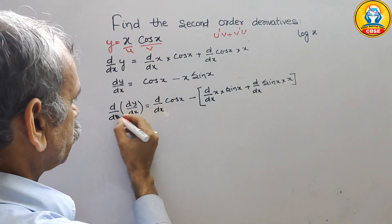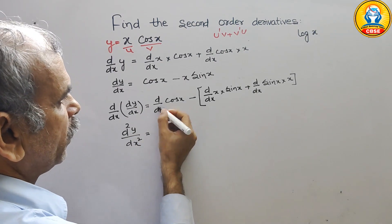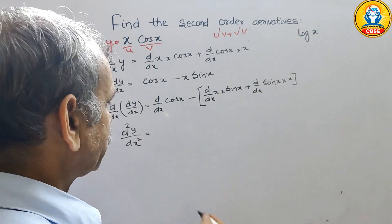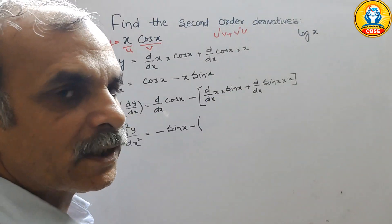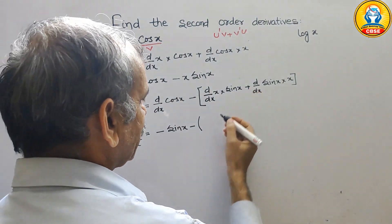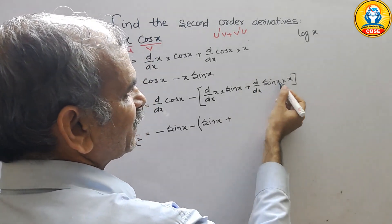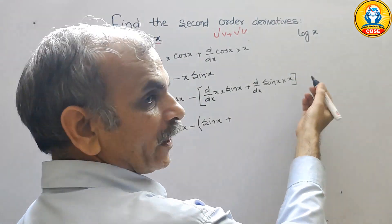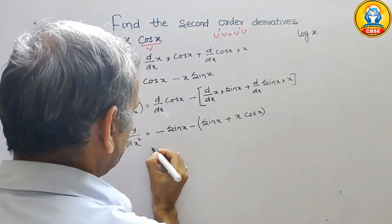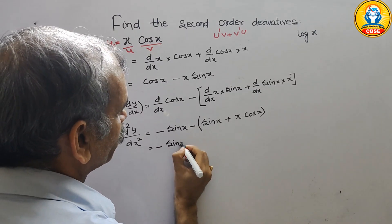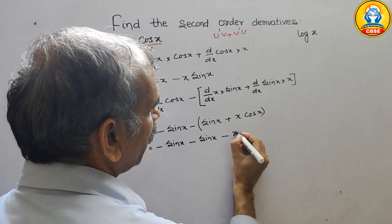Now solving this, d squared y by dx squared equals: derivative of cos x is minus sin x, minus — now derivative of x is 1 — so you get sin x, then x plus sin x, and derivative of sin x is cos x into x, giving x cos x. Now opening the bracket, you get minus sin x, minus sin x, and minus x cos x.